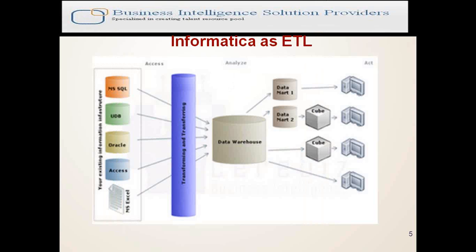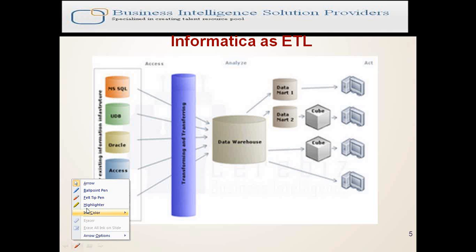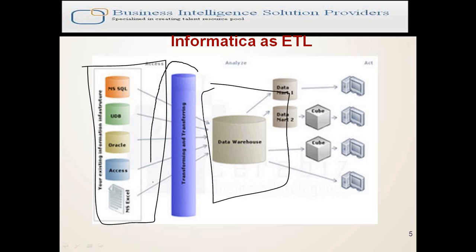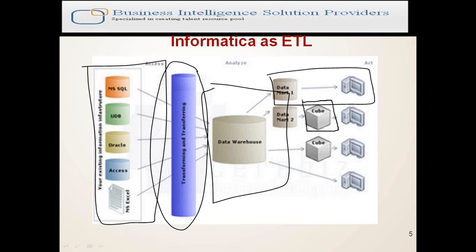This is the basic Informatica high-level architect design — what type of sources we have and how it is used. These are the different types of sources and this is the data warehouse. Between these two, we have Informatica transforming using transformations. We can develop data marts, which we can send as reports to the user directly. A data mart to a cube — a cube is a multi-dimensional database created by reporting tools like Hyperion, Cognos, or MicroStrategy. These people create cubes so they can extract data from the cube itself.